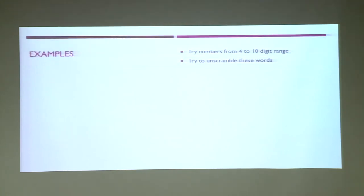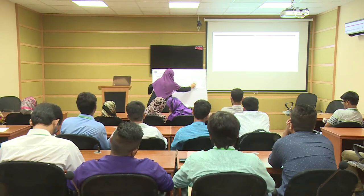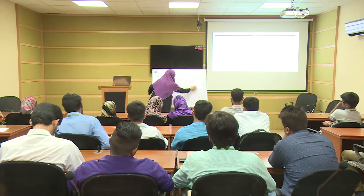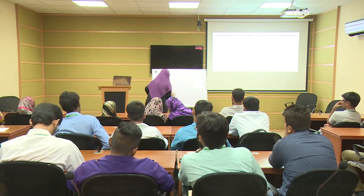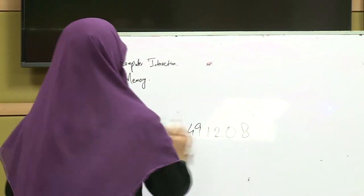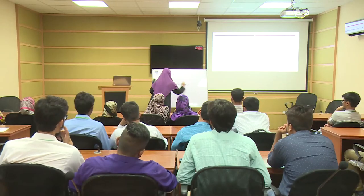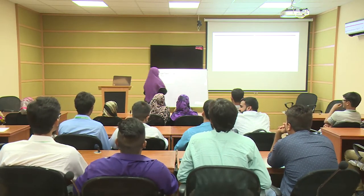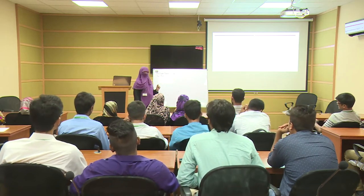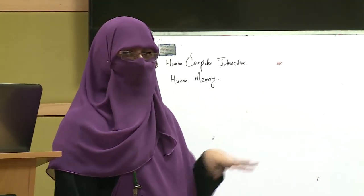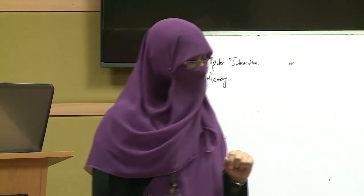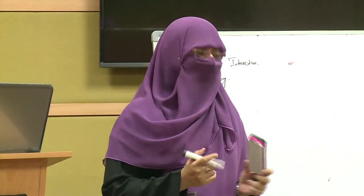Miller says that as humans, we memorize things in short term memory either in pieces of 5 or pieces of 9 — whether it is numbers or sentences. Structure makes it easy to memorize things. For example, I wrote some numbers on the screen and you were unable to remember them because they were too many and you could not find any pattern.